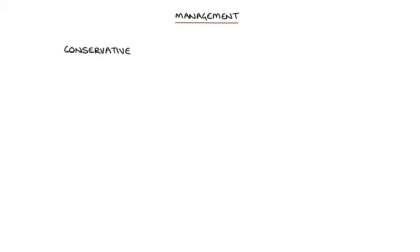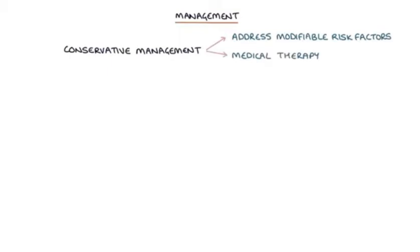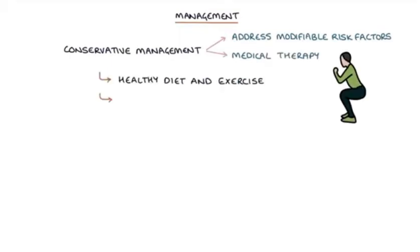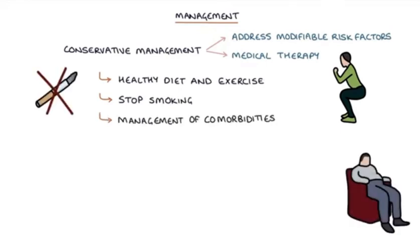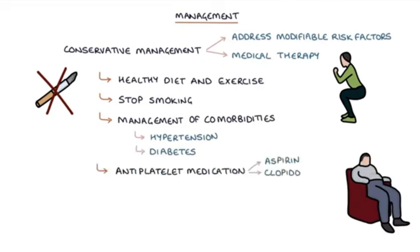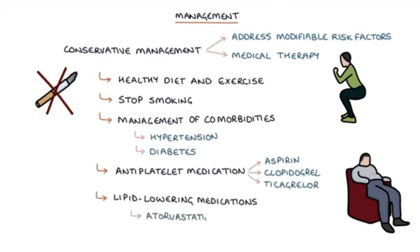Conservative management involves addressing modifiable risk factors and medical therapy. This includes having a healthy diet and exercise, stopping smoking, good management of comorbidities such as hypertension and diabetes, antiplatelet medications such as aspirin, clopidogrel or ticagrelor, and lipid-lowering medications such as atorvastatin.